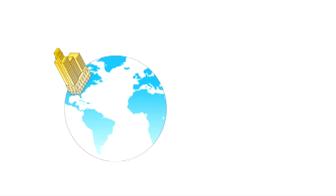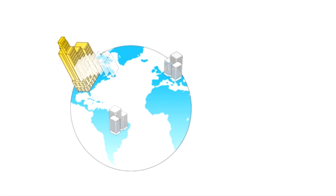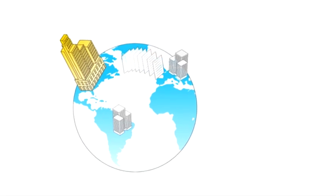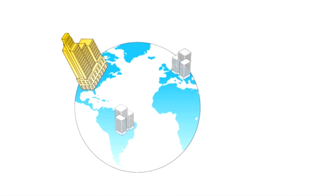As companies grow, the number of branch offices increases around the globe. Users working in branch locations frequently need to connect to data and applications hosted at headquarters through slow wide-area networks, or WANs. BranchCache in Windows 7 Enterprise can help reduce WAN utilization and increase responsiveness when accessing documents, webpages, and videos stored on file servers and intranet sites running on Windows Server 2008 R2.